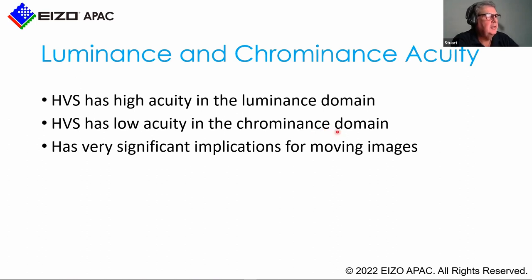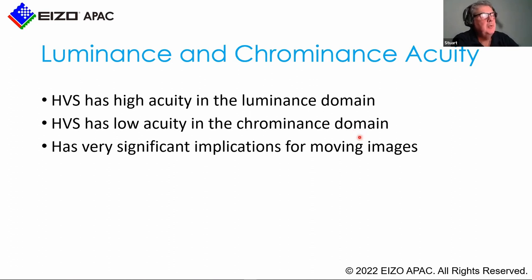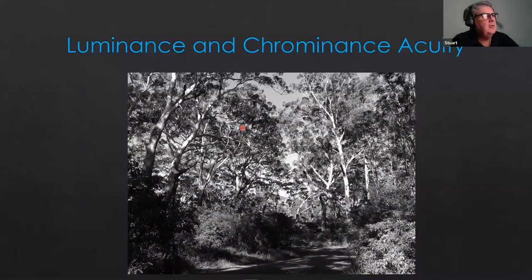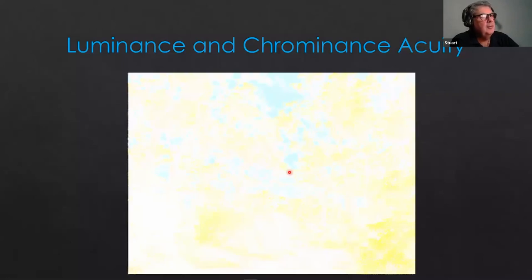For example: a colorful image in the bush — when we go to grayscale, showing only luminance, we can still clearly make out what the image is about. But when we look at only the color information, it's almost impossible to understand what the picture is about, because there's no real detail in the chrominance. When we join them together, of course, we get a nice color picture.